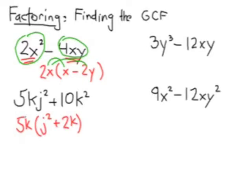Again, to check, use distributive property. 5k times j² is 5kj² and 5k times 2k is 10k². So those are your factored results.